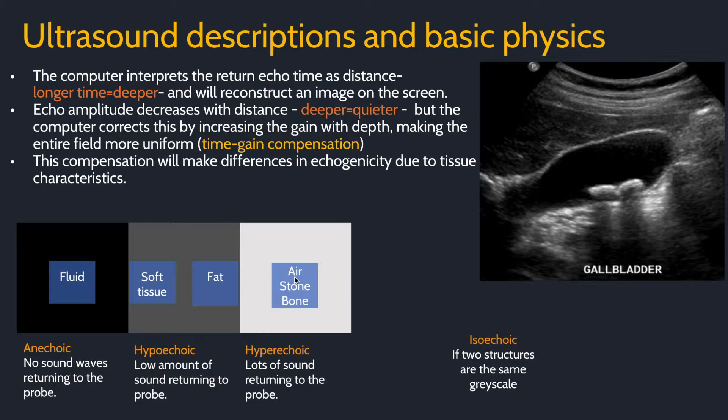For example, the fluid in the gallbladder here is anechoic, the liver is hypoechoic to the abdominal fat, and the gallstones are hyperechoic.